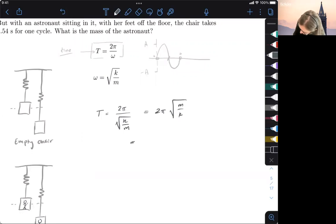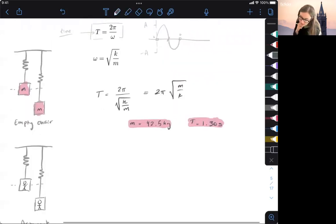So we know that when the mass is equal to 42.5 kilograms for this first one, so this empty chair is 42.5, nothing's in there. That's our first one. Then the period is equal to 1.30 seconds.